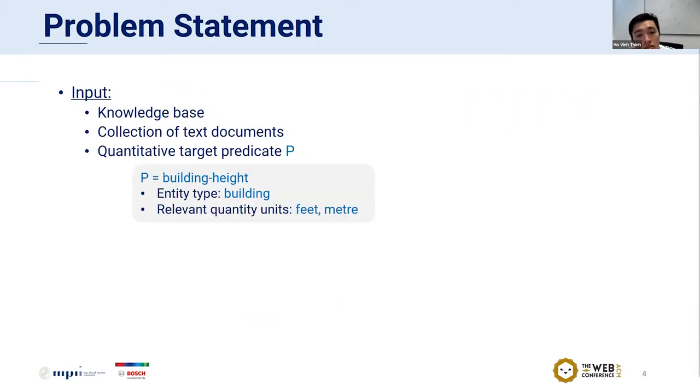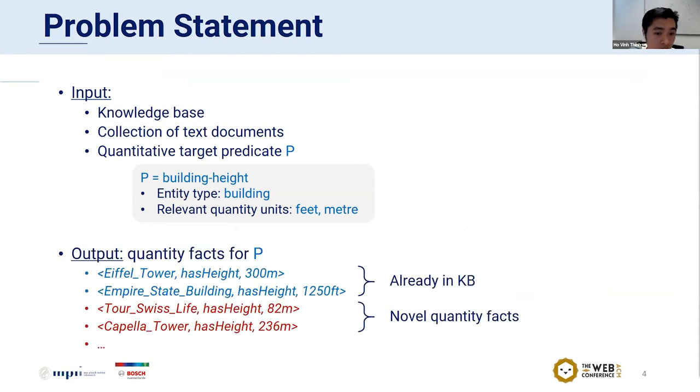Our problem statement is as follows. In the input, we are given a knowledge base, a collection of text documents, and a quantitative target predicate P, which is assumed to be not well covered by the KB. This target predicate defines constraints about the type of the entities to be the subject of the fact and the set of possible units of the quantity object. In the output, we want to extract quantity facts for P from the raw text documents, which could include facts already in the KB and also new quantity facts.